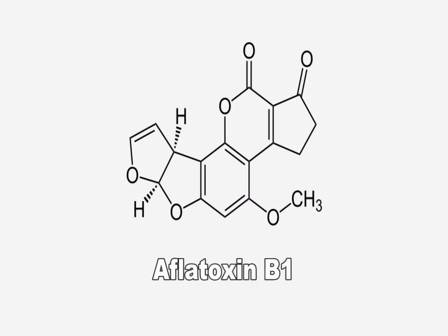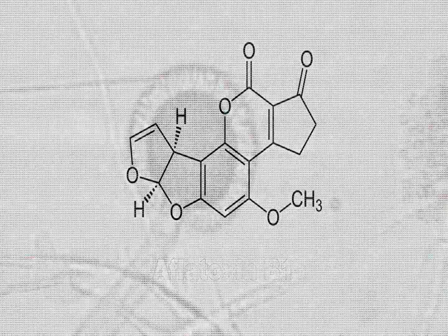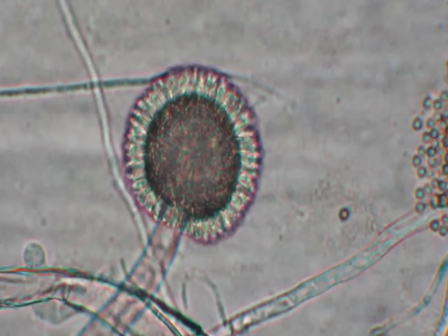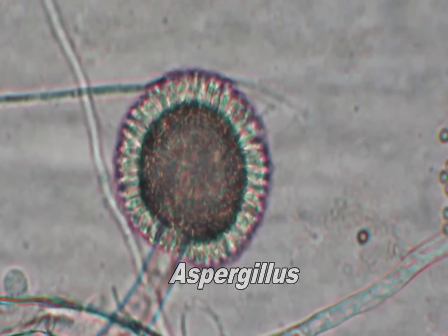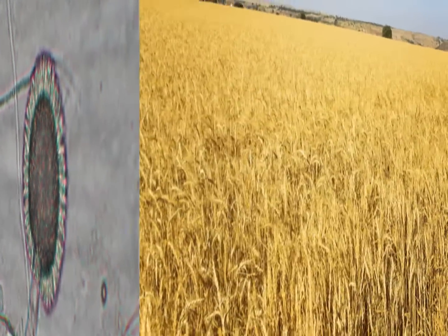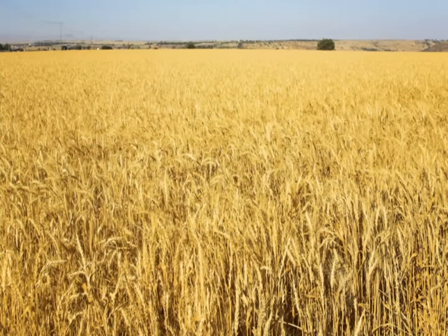Aflatoxins are among the most carcinogenic substances known to man. Produced by Aspergillus fungi, they contaminate grains before harvest and during storage.